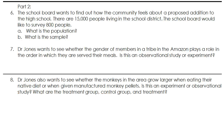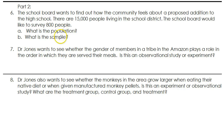This video is also about experiments, observational studies, and margin of error. The school board wants to find out how the community feels about a proposed addition to the high school. There are 15,000 people living in the school district and the school board would like to survey 800 people. The population is the entire group in which you are interested, and the sample is the smaller subset you're going to question. So here, the population is the 15,000 people in the school district, and the 800 people surveyed are the sample.